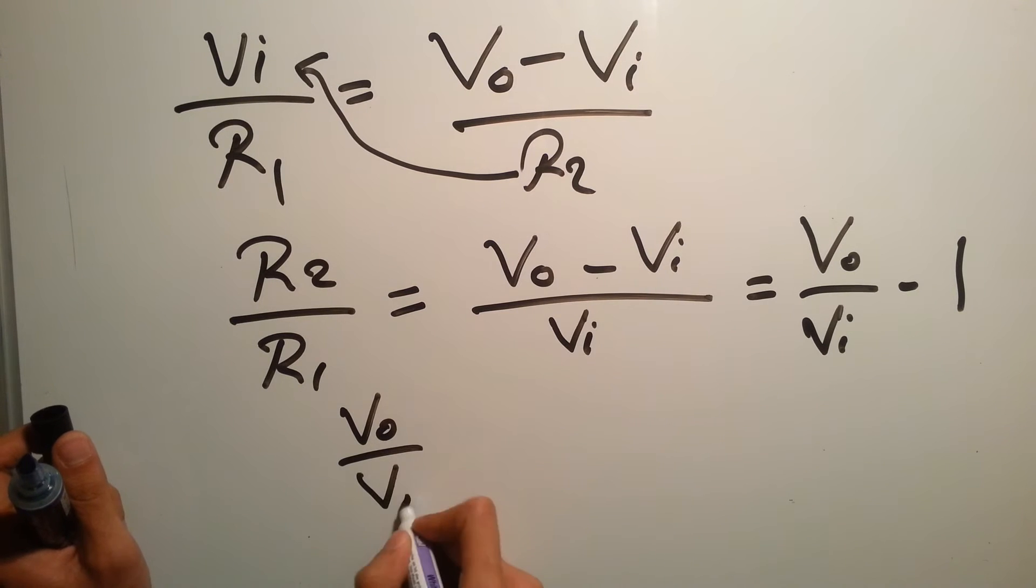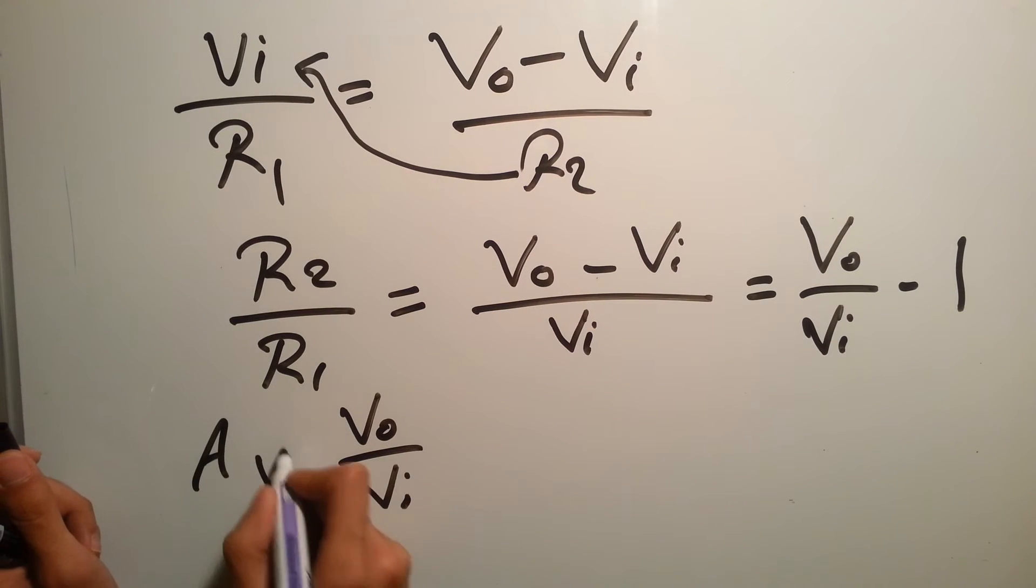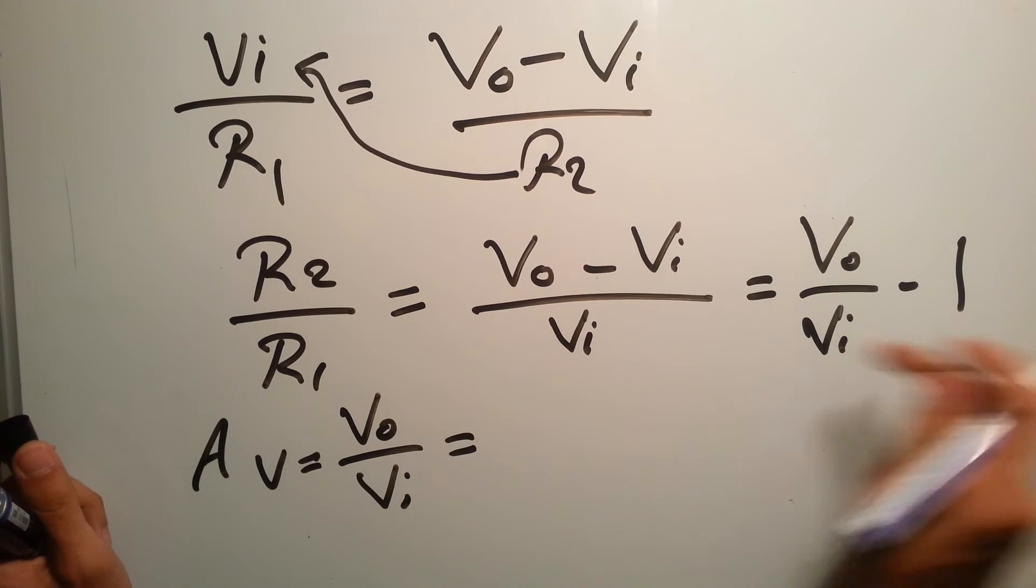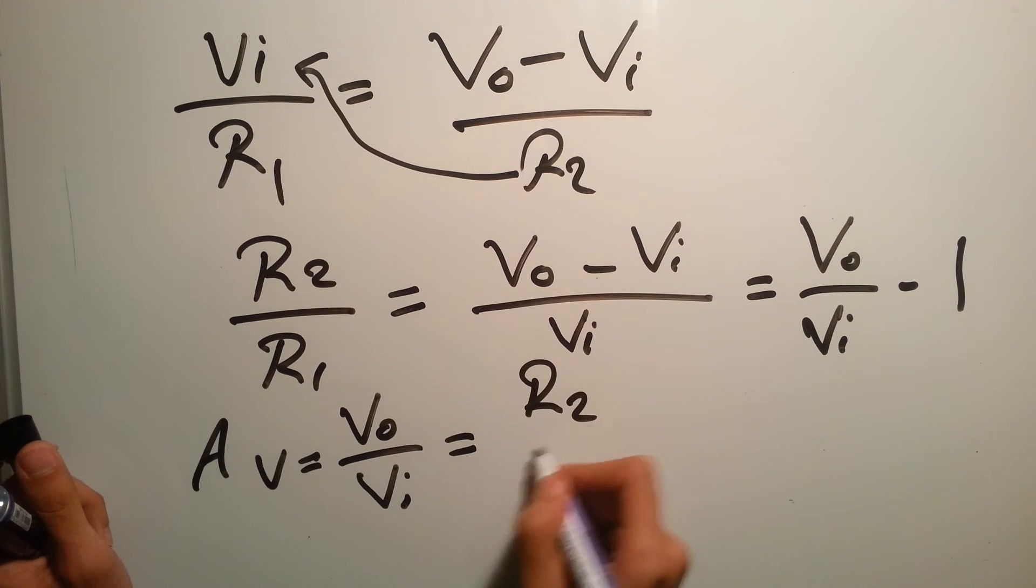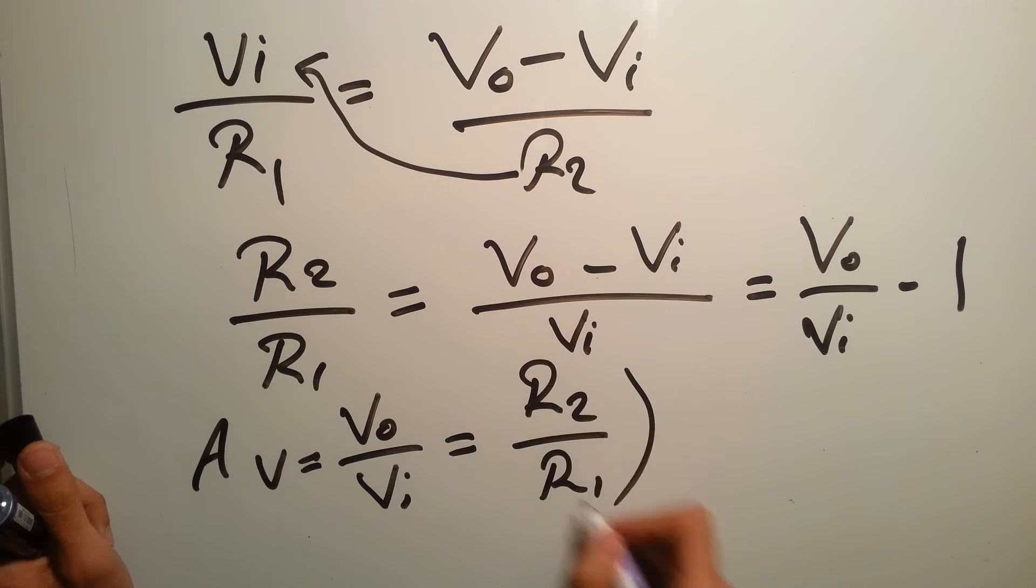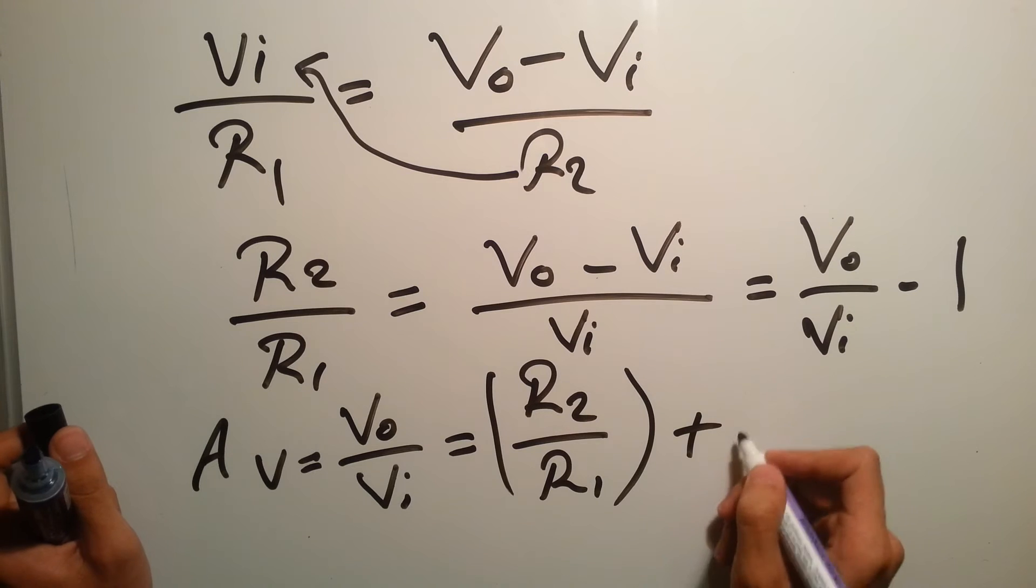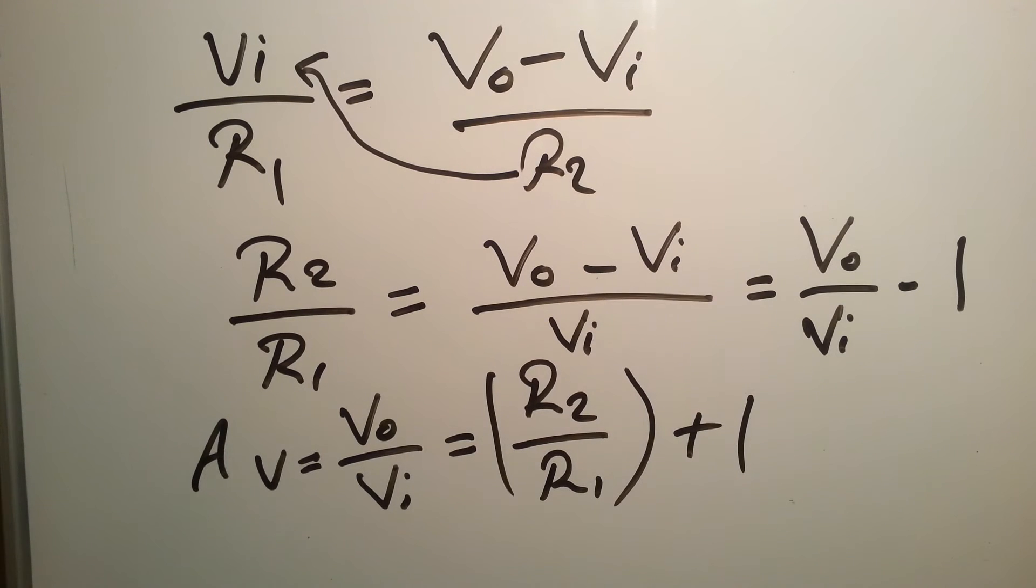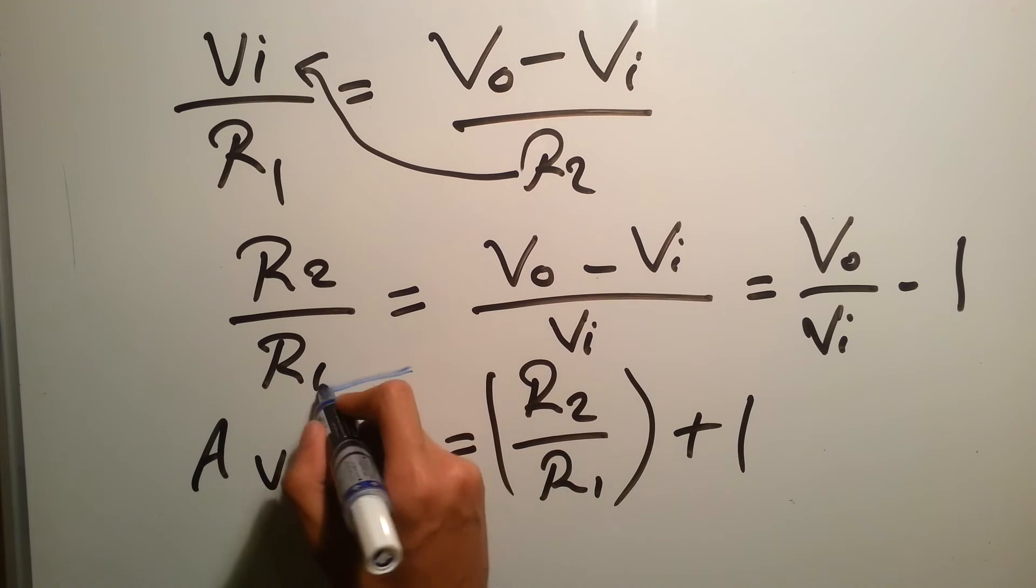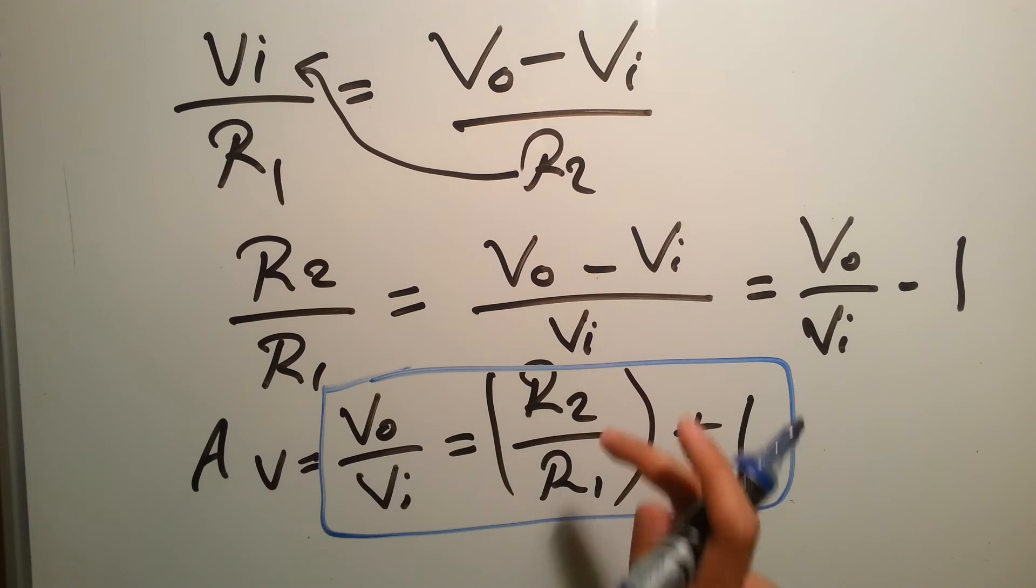So we want to keep this gain on one side. V output over V input, which is the voltage gain, equals R2 over R1 plus one. So this is the gain for the non-inverting. From this relation, the gain equals R2 over R1 plus one.